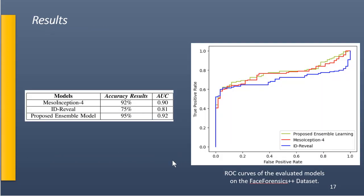We first evaluated the performance of each approach separately: MesoInception from the first approach achieved 90% accuracy, and ID-Reveal from the identity-aware approach achieved 75% accuracy. We then experimented with the combination of both techniques using the stacking classifier under the ensemble learning model, and obtained a further improvement in accuracy, reaching 95%.